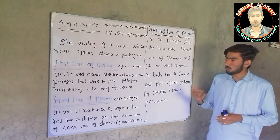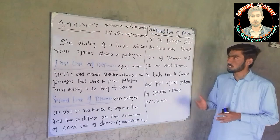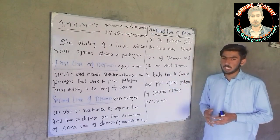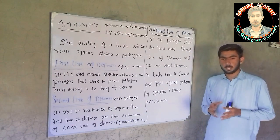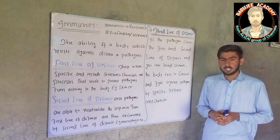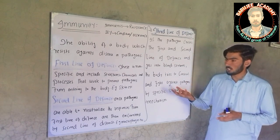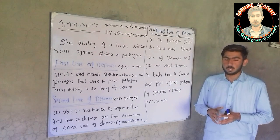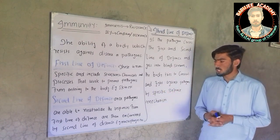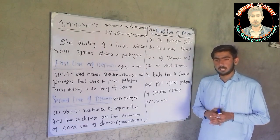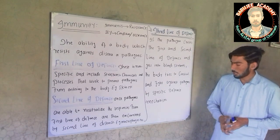Let me summarize today's class. Immunity is derived from 'immunis', which means resistance, and '-ity' means conditions of all kinds. The immunity system is the capability of a body which resists against pathogens or disease-causing agents. Immunology is the branch of biology in which we study about the immunity system. The immunity system is a system responsible for protecting us from pathogens or diseases. First line of defense is non-specific and includes structures, chemicals and processes that prevent pathogens from entering the body — example is skin. Second line of defense: once pathogens neutralize the first line of defense and penetrate into the body, they are encountered by the second line of defense — example is macrophages.